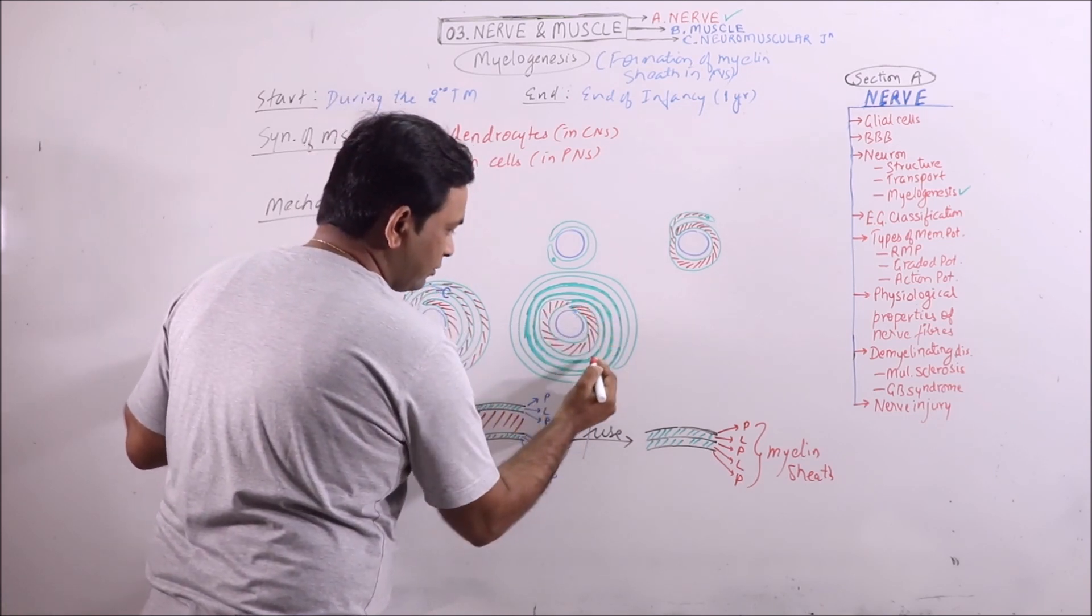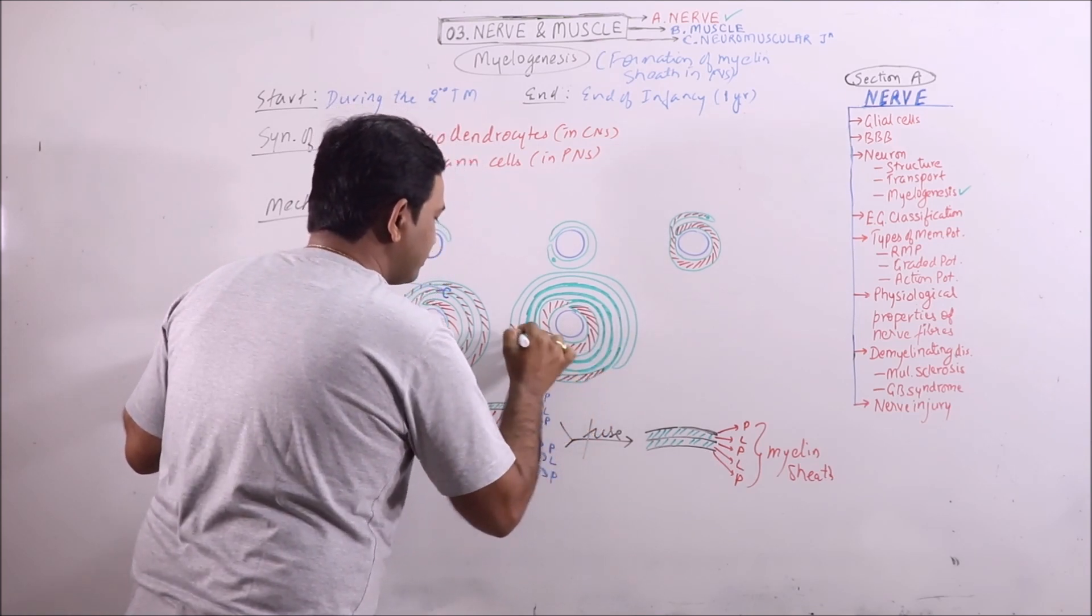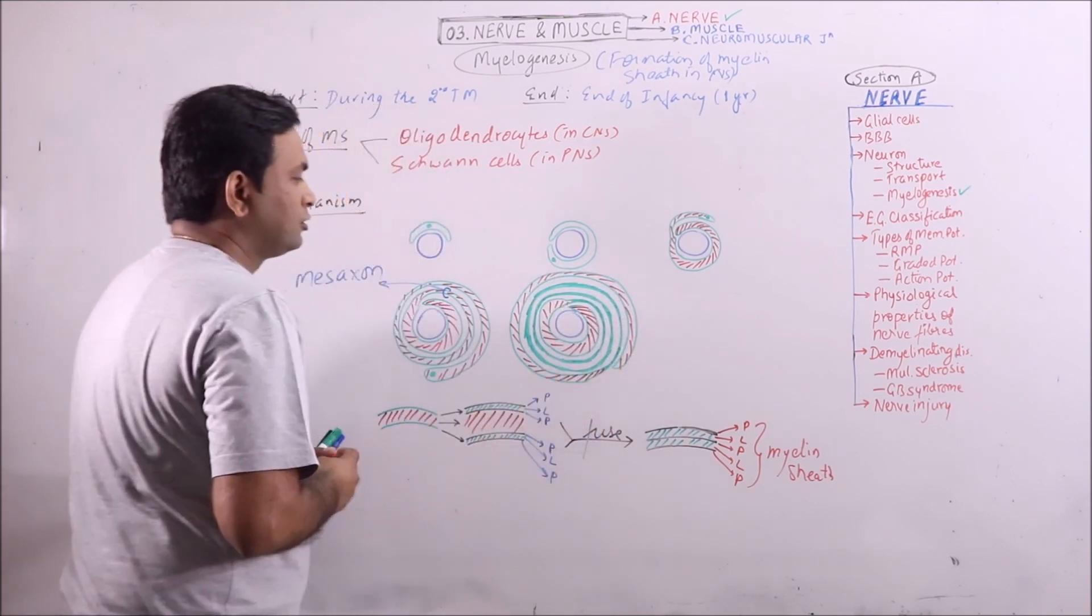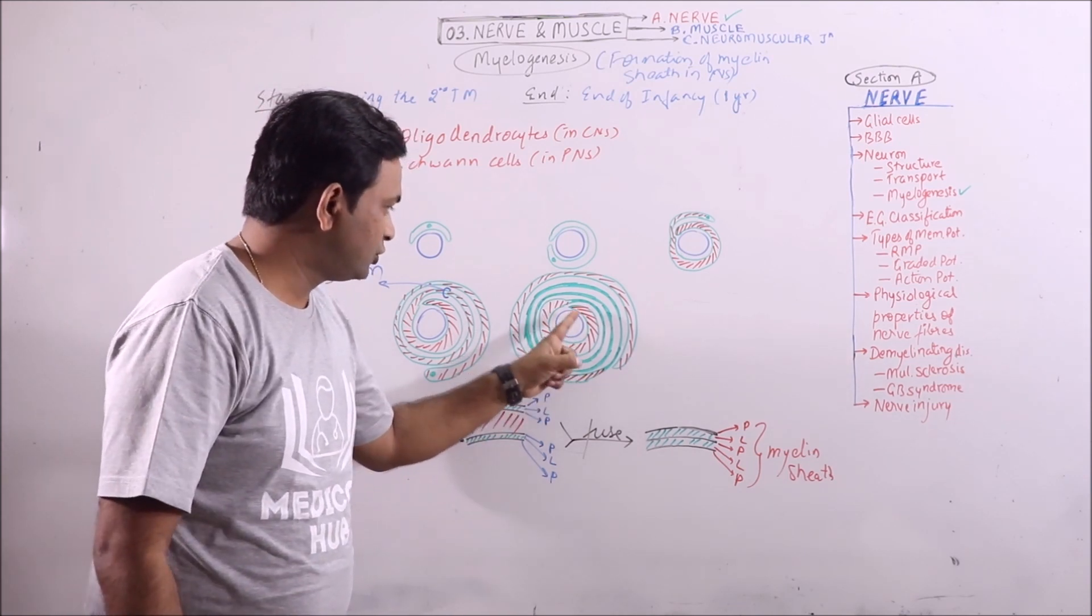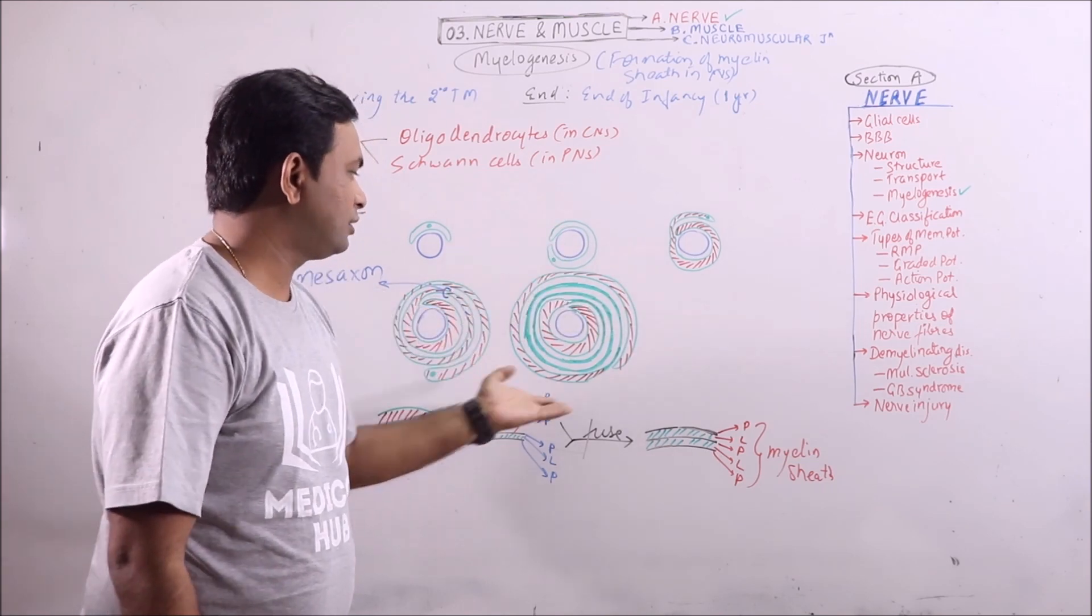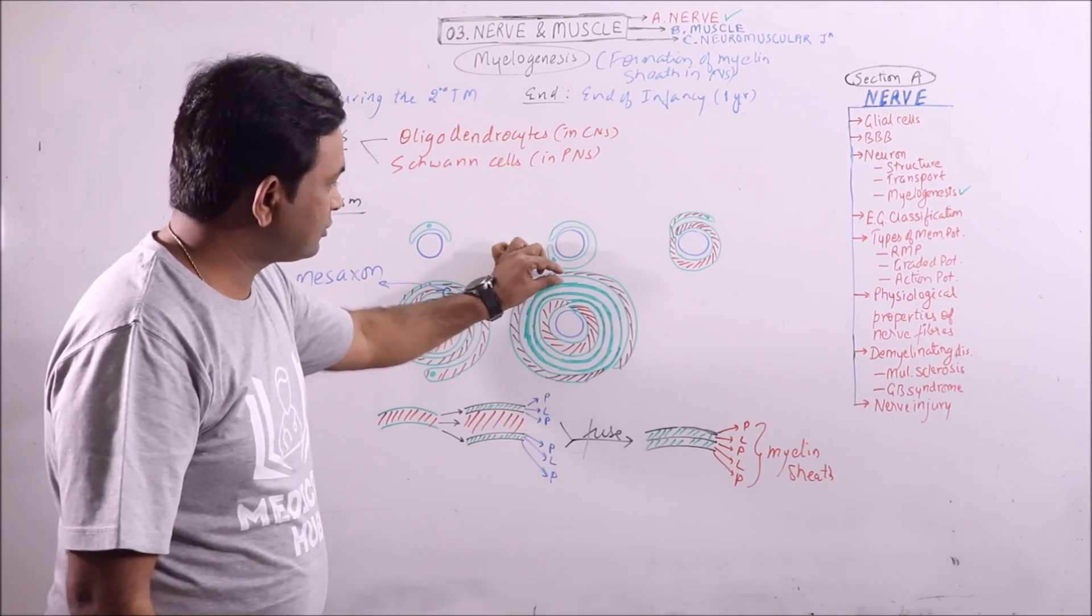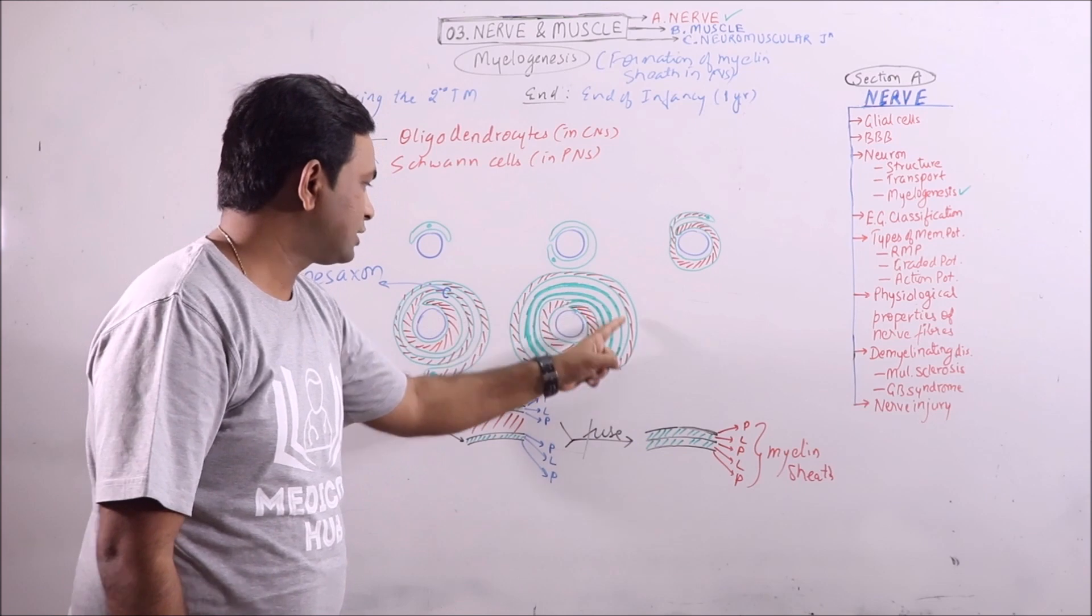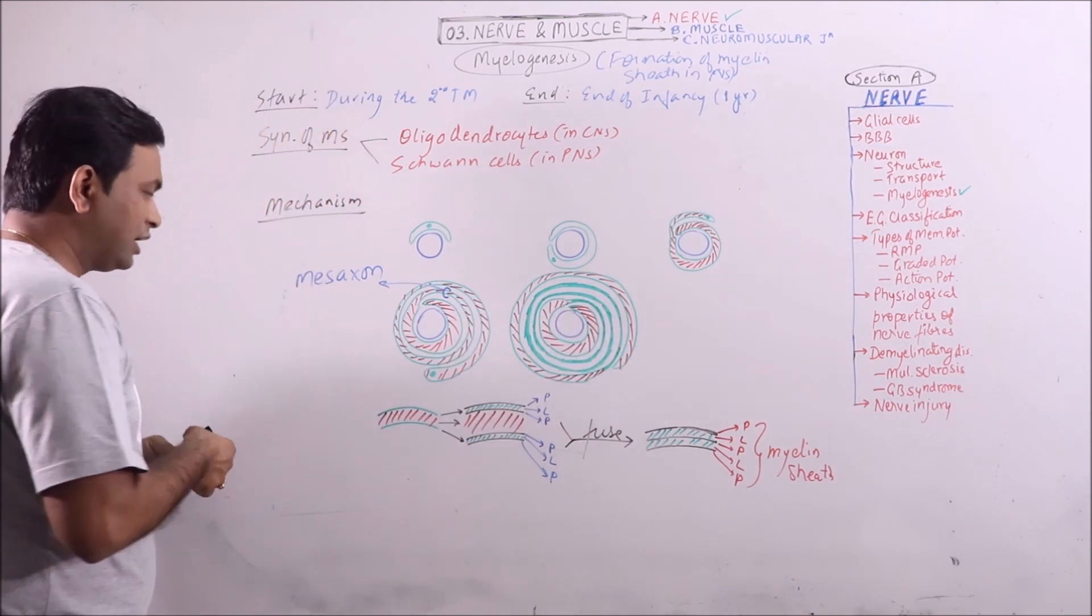Now here in between there is no cytoplasm. But again we can observe cytoplasm. So cytoplasm of Schwann cell can be observed just outer to the axon and in the most superficial wrap of the Schwann cell. But in between the plasma membranes are fused, means axon layers are fused, that's why it will appear as myelin sheath in between. So this is the formation of myelin sheath.